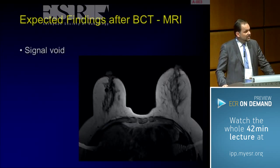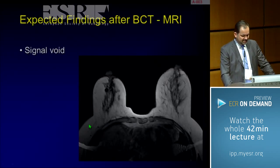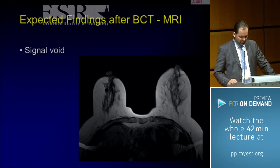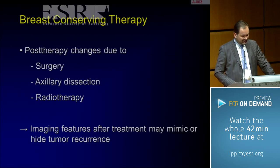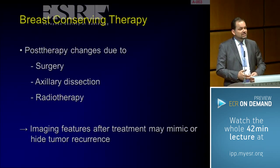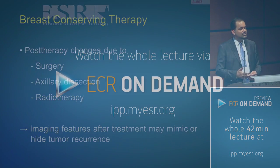What you can see here, for instance, are expected findings. You can see signal voids in this MRI of the breast after surgery due to surgical clips. In breast-conserving therapy, changes are, of course, due to surgery.